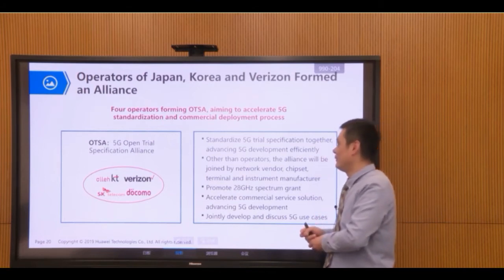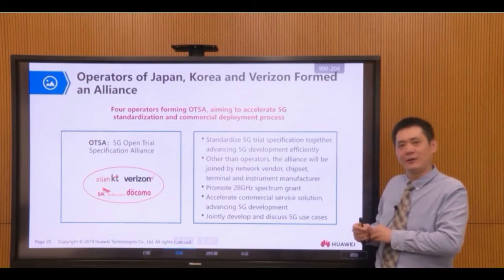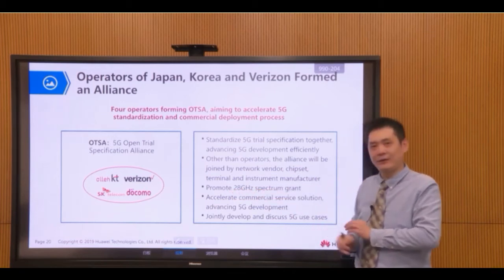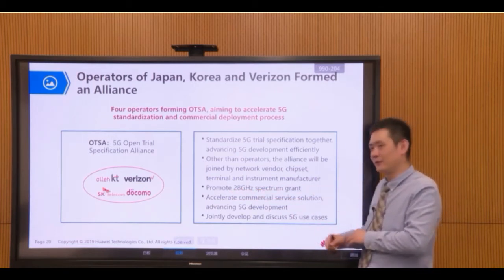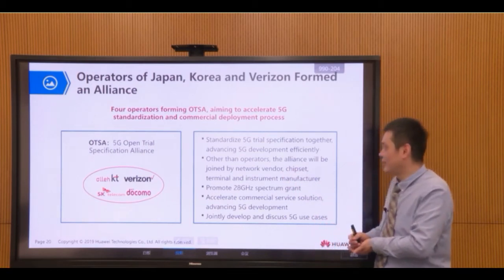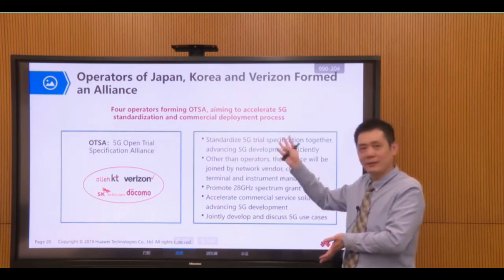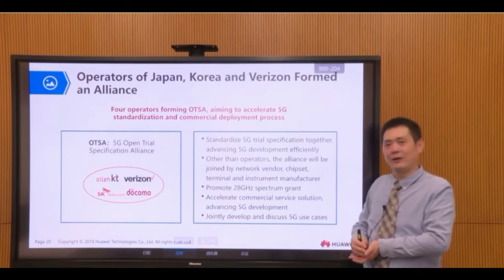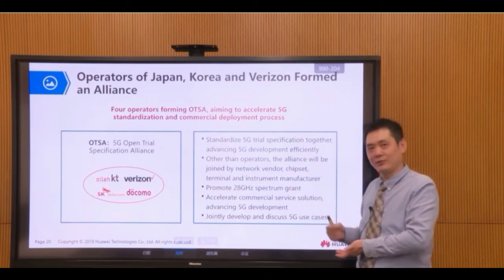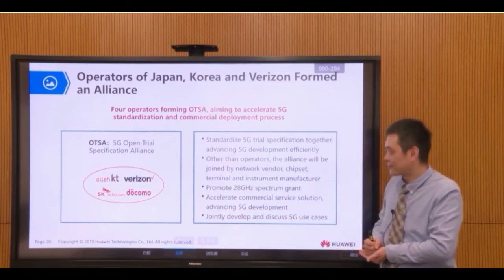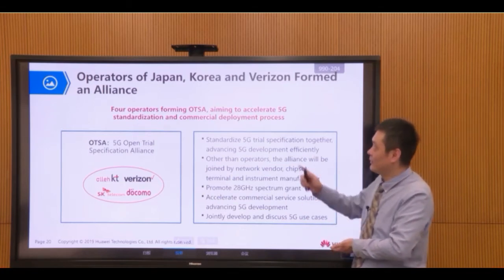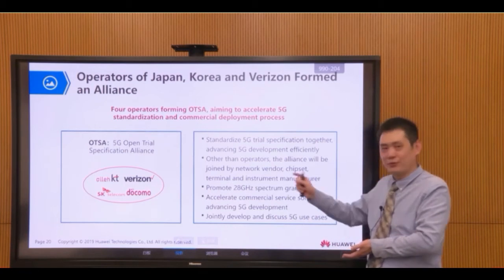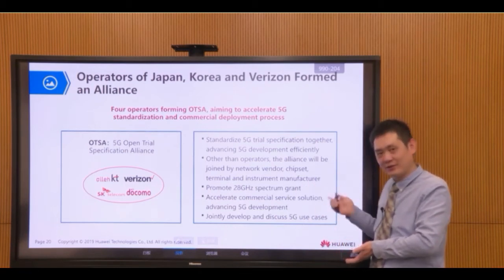OTSA focused on FWA — Fixed Wireless Access. They planned to use 28 GHz frequency to provide FWA services, and their technical development was mainly based on LTE with some enhancements. Their goal was to provide broadband access using wireless technology to users. So this organization of operators wanted to push standardization progress forward.